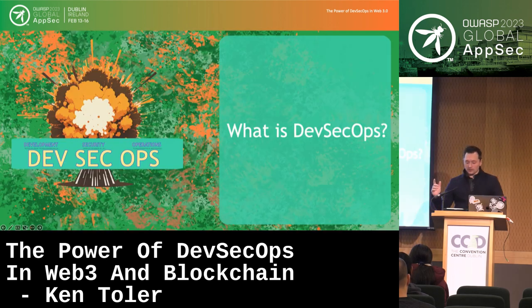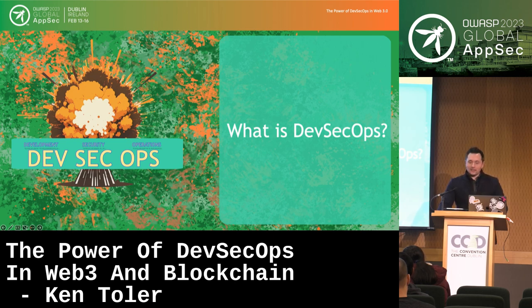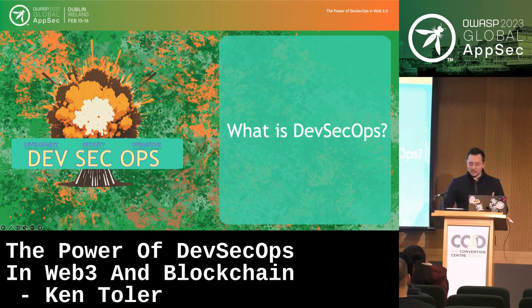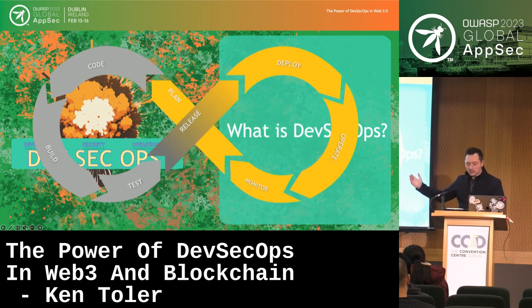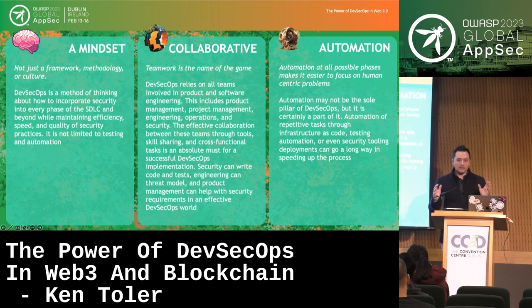The next buzzword I want to unpack is one of my absolute favorites: DevSecOps. There's a whole track dedicated to this one word, and I think it's pretty controversial — we don't always agree on the same definitions. One of my favorite things to ask people is, what does DevSecOps mean to you? Some talk about secure DevOps, security automation, shifting left. For me, I think of DevSecOps as a method composed of three pillars that drive decisions and application security.